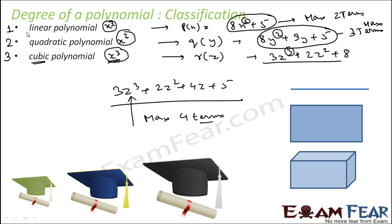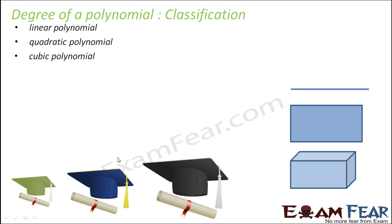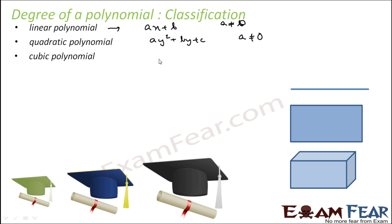If you want to write these in a general way: a linear polynomial can be written as ax + b, where a should not be equal to 0. A quadratic polynomial can be written as ay squared + by + c, where a should not be equal to 0. A cubic polynomial can be written as az cubed + bz squared + cz + d, where a should not be equal to 0.